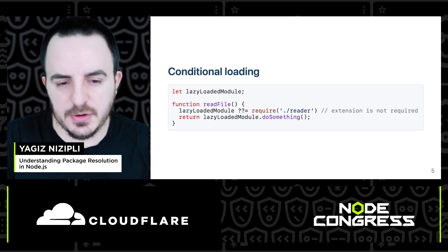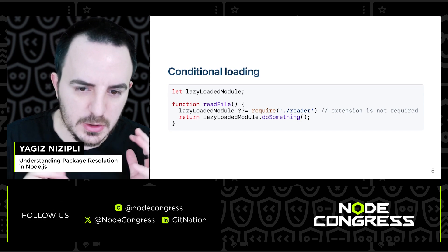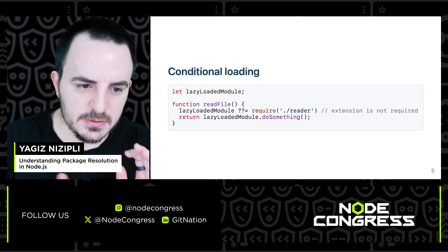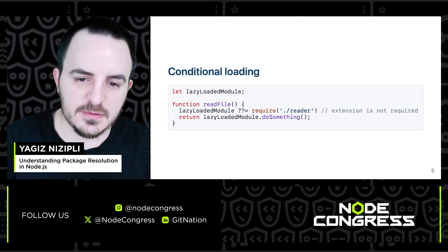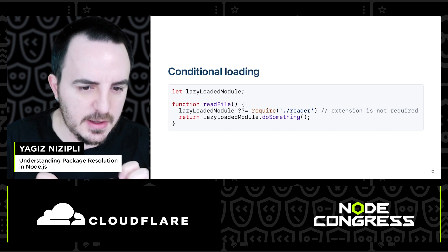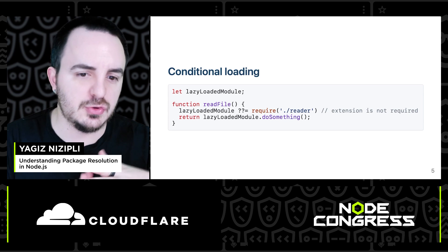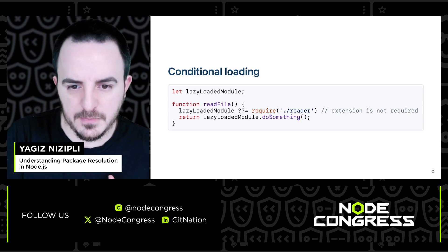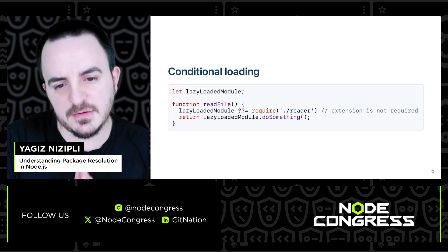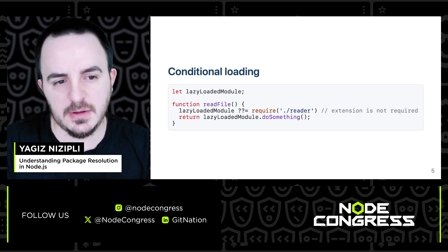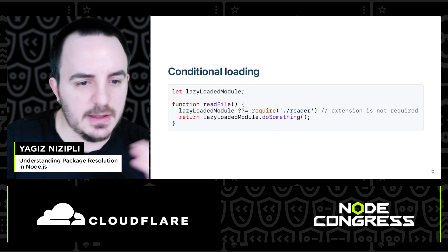Then it returns a value and we can run the function. In order to load a file without an extension, the implementation makes a synchronous call to the file system to check if reader.js exists. If not, it automatically checks for reader.json, and so on. If not found, it returns an error. This is particularly slow because additional file system calls are needed to determine if the file exists, and it will impact your performance — small or big.